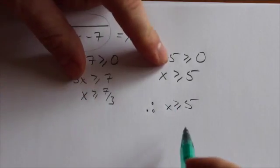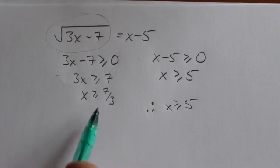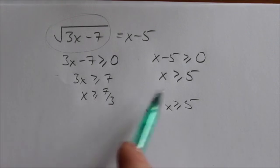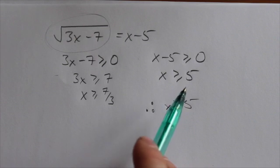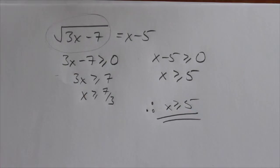If that's true, then we know both of these are true. However, you can pick a number like 4. 4 is bigger than 7 thirds, but it's not bigger than 5, so that wouldn't satisfy the restriction. That's what the restriction has to look like for this equation.